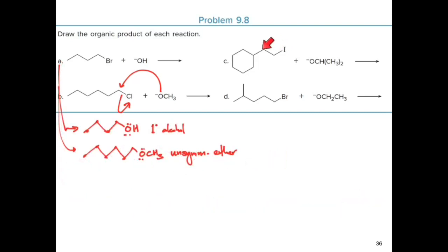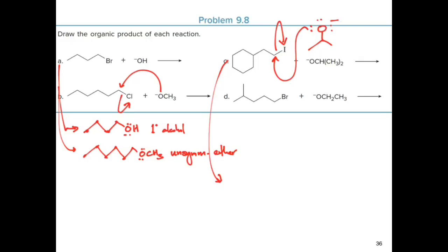For the third reaction, we have a primary alkyl halide reacting with isopropoxide, a strong nucleophile. The isopropoxide attacks the electron-deficient carbon atom, resulting in cleavage of the sigma bond between that carbon and the halogen. The product is an ether consisting of a cyclohexane ring, an oxygen, and an isopropyl group.